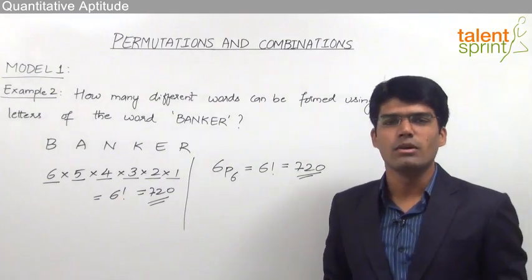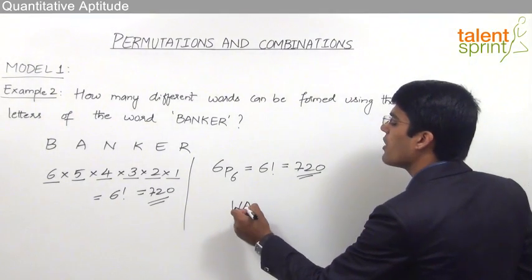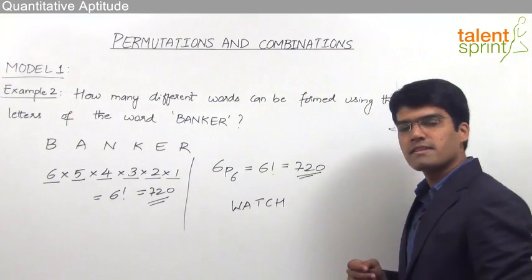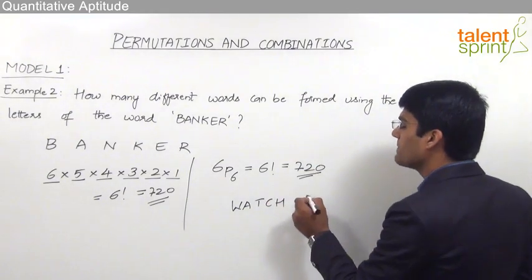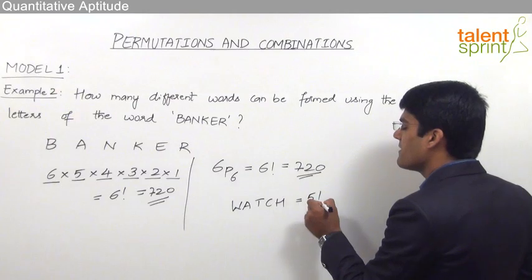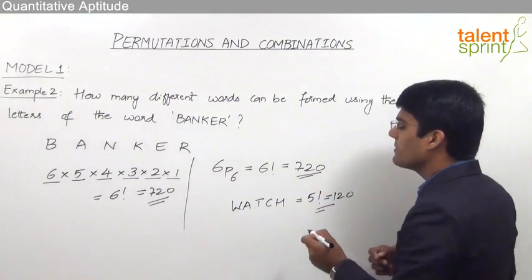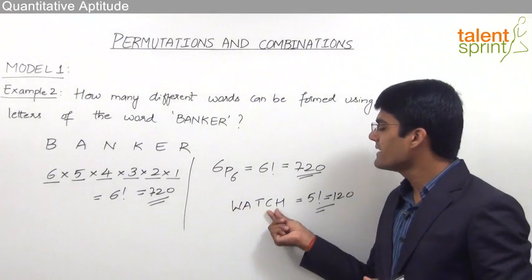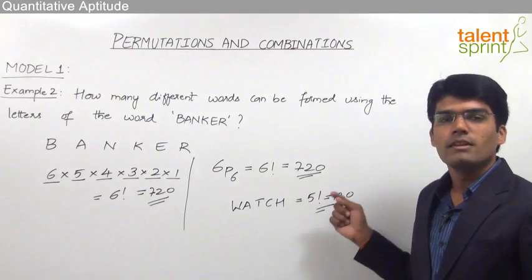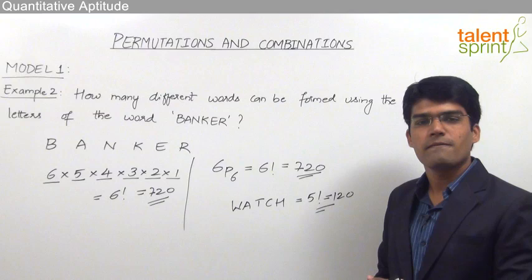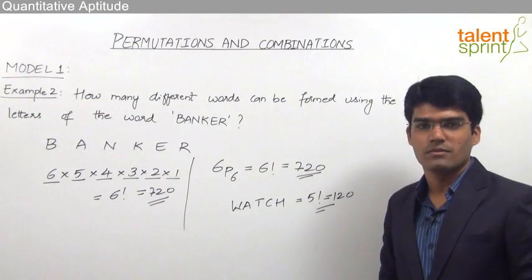Likewise, for a five-letter word such as WATCH, how many words can be formed using its letters? There are five letters, so five letters in five positions give us 5 factorial words. Five factorial is 120. So whatever the given word, simply count the number of unique letters and arrange them — five factorial for a five-letter word, six factorial for a six-letter word, and so on.